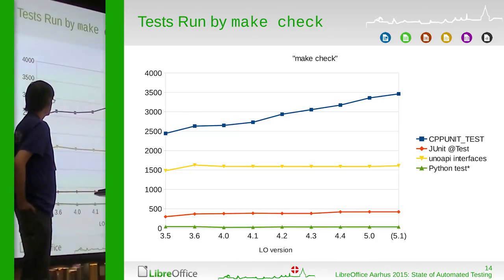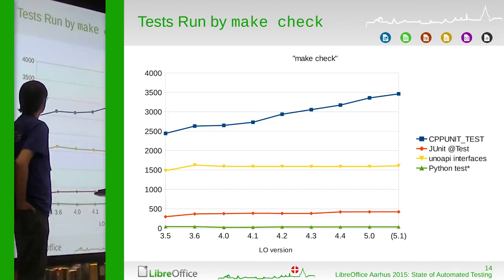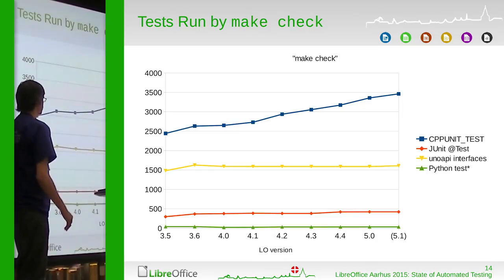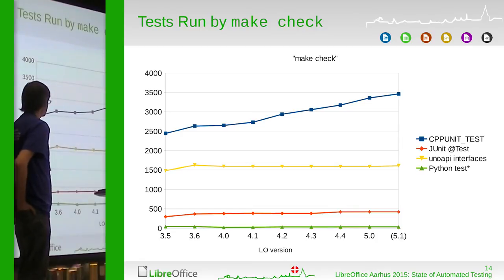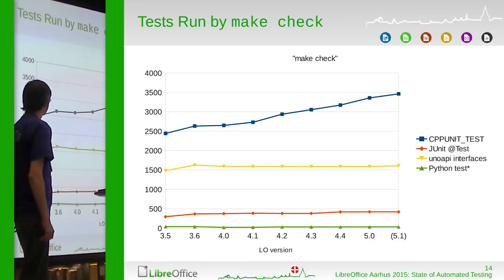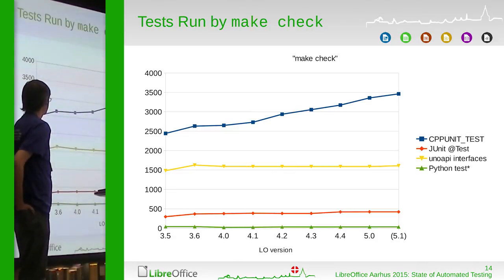Now that we've seen the four different kinds of tests, here's a quick overview to compare how many of each we have relatively. With the caveat that the UNO API interface count is a somewhat different measurement, you can clearly see that we have more CPPUnit tests than everything else combined, while we still have relatively many UNO API interface tests.